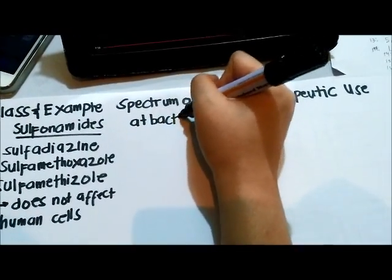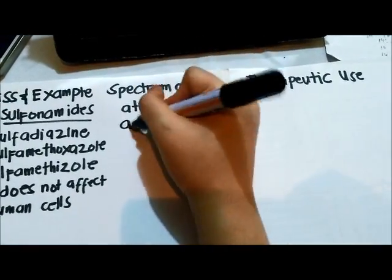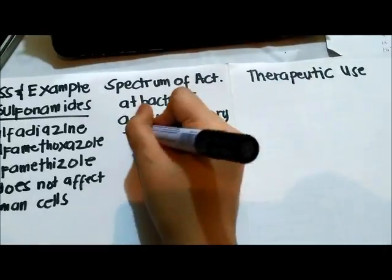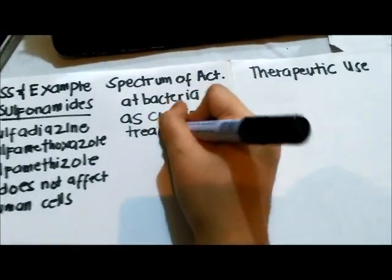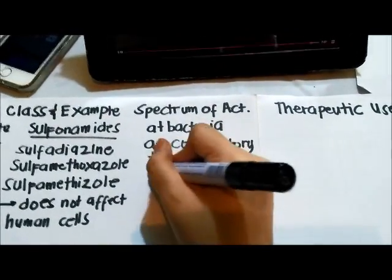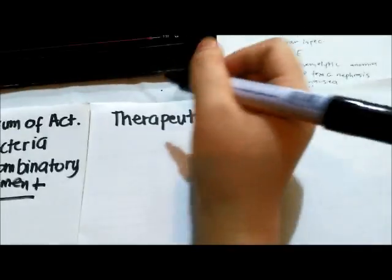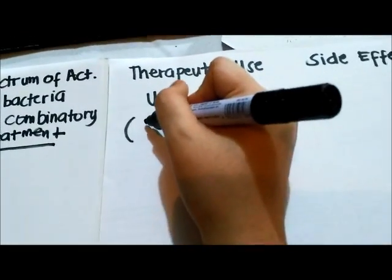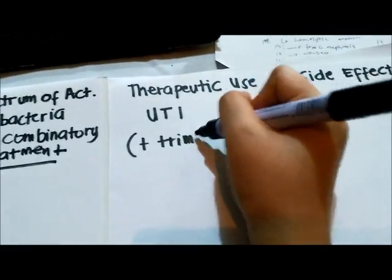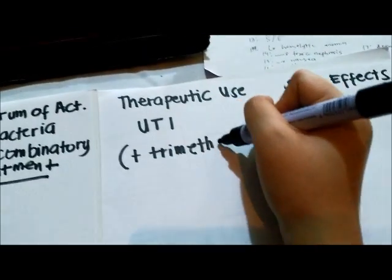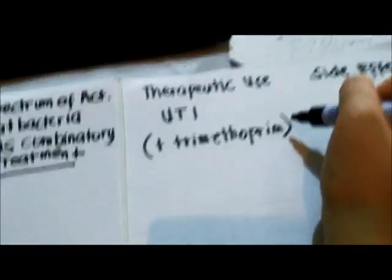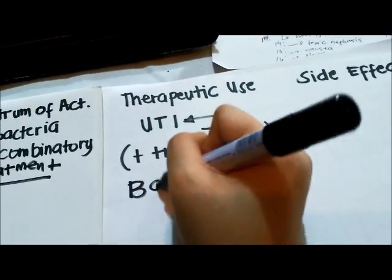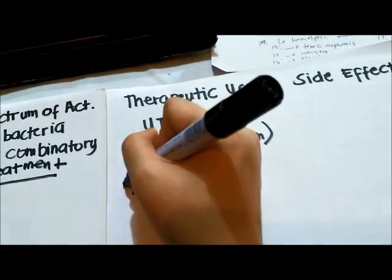Because they are bacteriostatic, most of the time they are formulated to be used alongside other bactericidal antibiotics. We usually use them as combinatorial treatment. They are used against UTI or urinary tract infections, with combinatorial therapy usually given with trimethoprim. This combination of sulfonamides and trimethoprim is called Bactrim.